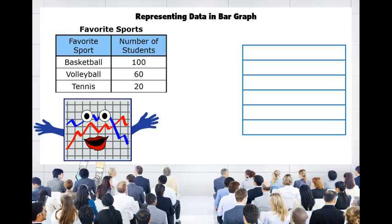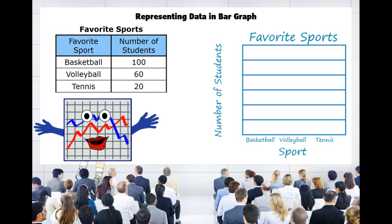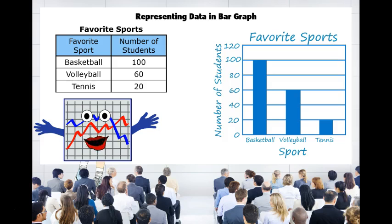Now let's look at making a bar graph. I see they've given us a table of favorite sports and the results of a survey for the number of students who chose each sport. First we need a title and some labels. Then we need a scale. Since all of our numbers are multiples of 20, let's make our scale 20. Now let's make our bars: basketball had 100 students, volleyball had 60, and tennis had 20. And there we have our bar graph.